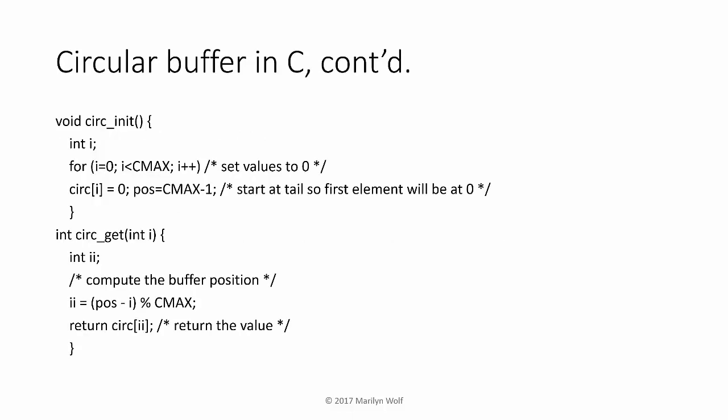Here's some C code to initialize the circular buffer, and here is a function to get the value at the ith position. Notice that we use a modulus operator to translate the index for our current set of data into the buffer position.